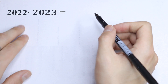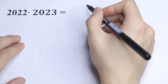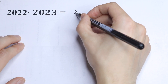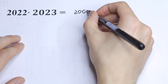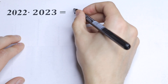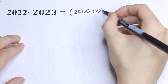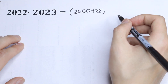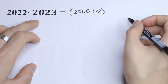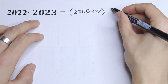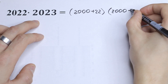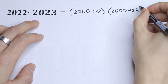So how can we express this 2022? Let's try to express this as 2000 plus 22. Of course we can do this — it will be equal to 2022. And let's express 2023 in the same way: 2000 plus 23.